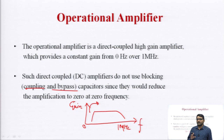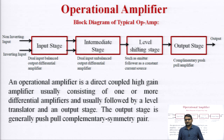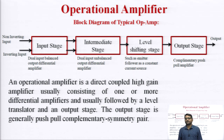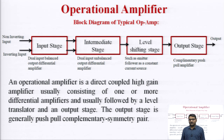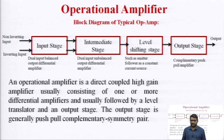The internal structure of an operational amplifier consists of one or more differential amplifiers providing gain, followed by a level translator — also called level shifting — and an output stage. The output stage is basically a push-pull complementary symmetry pair of PNP and NPN transistors.